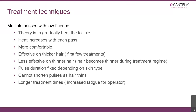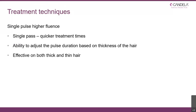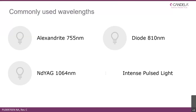With multiple pass diode systems, the pulse duration is generally fixed depending on the skin type, which means you don't have the ability to shorten your pulses as that hair becomes thinner. And because you're doing multiple passes over one area, the treatment time is longer than the single pulse option. The single pulse, higher fluence approach means one pass — you don't double pass or fire two pulses in the same area — so treatment time is quicker. You have the ability to adjust pulse duration based on the thickness of the hair, making it effective on both thick and thin hair, and you can adjust the spot size for speed and area coverage.